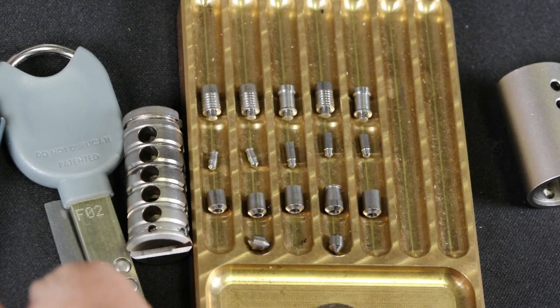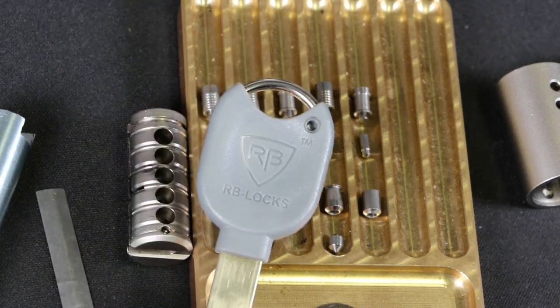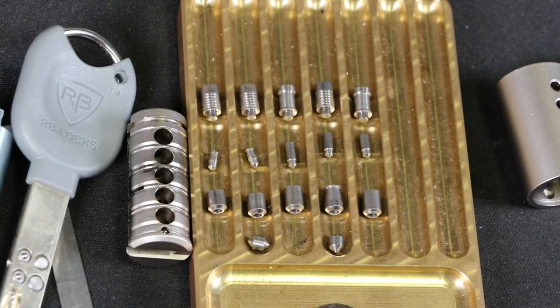So that's the Rav Bariach lock cysts. Thanks everyone. Bye.